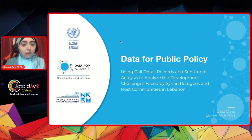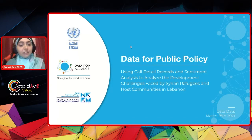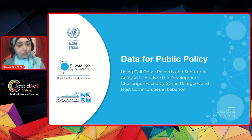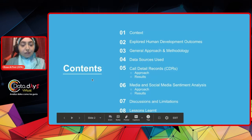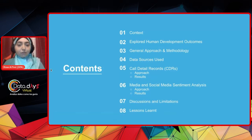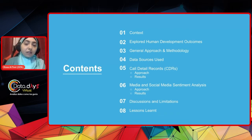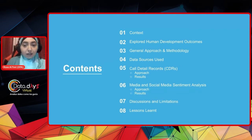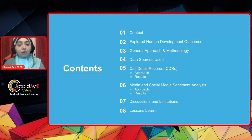This project was in collaboration with the United Nations Economic and Social Commission of Western Asia, which is headquartered in Beirut, in addition to partnering with the Qatar Computing Research Institute, which is part of the Hamad bin Khalifa University in Qatar. For this presentation today, I will be first giving context about the refugee situation in Lebanon, then looking at the human development outcomes we aimed to target, the general approach and methodology, the data sources used, and at the end, some discussions, limitations, and lessons learned.